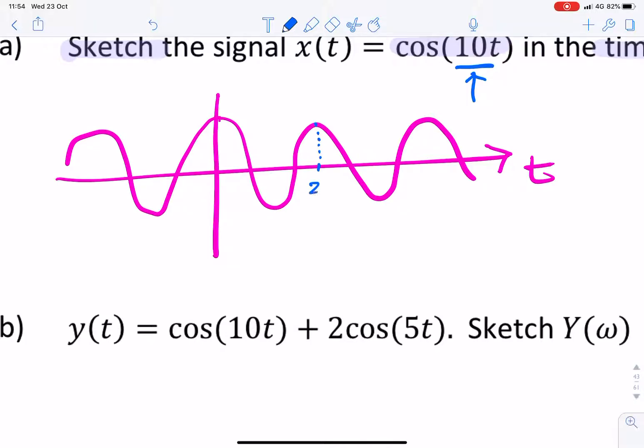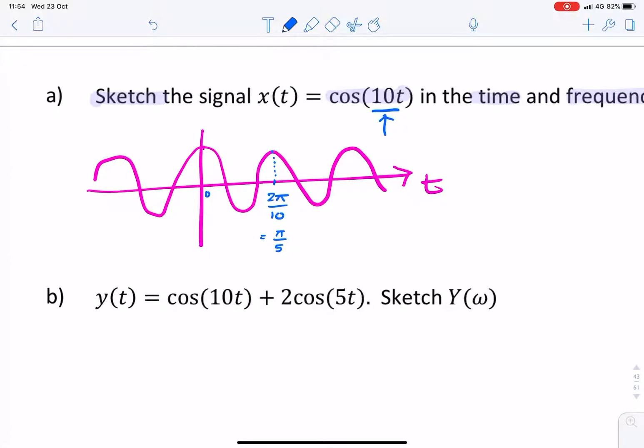that's 2π divided by 10, or π over 5. That should be enough for our cosine.